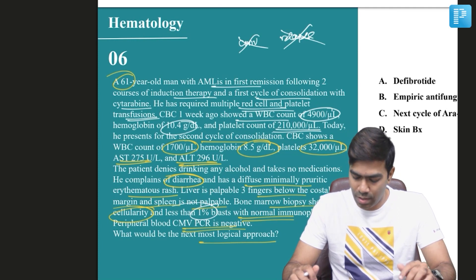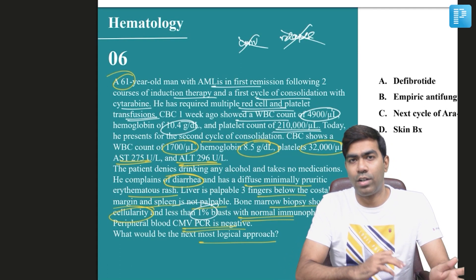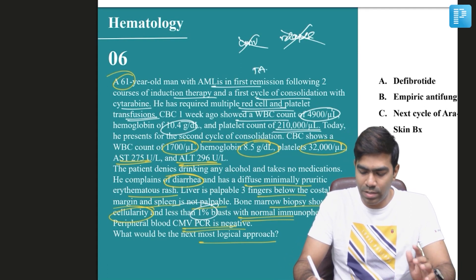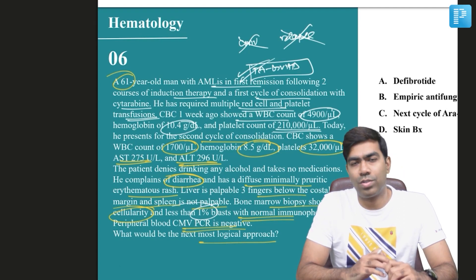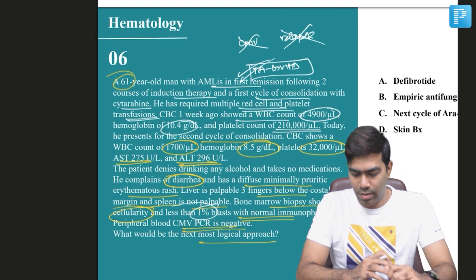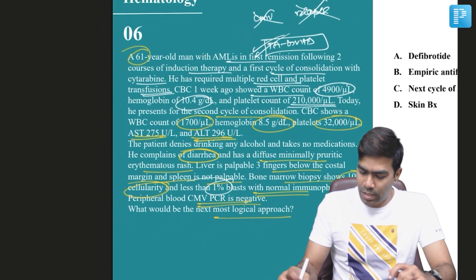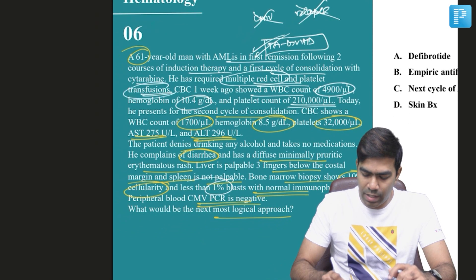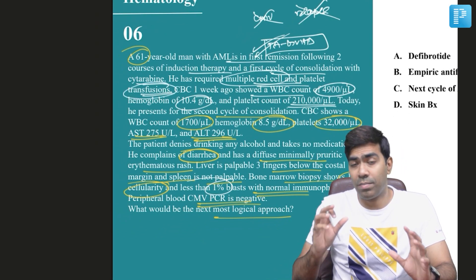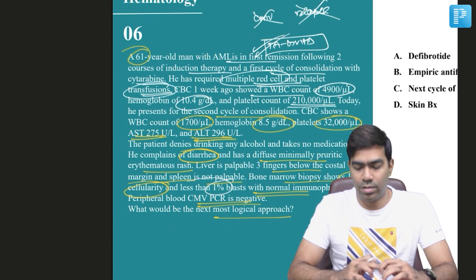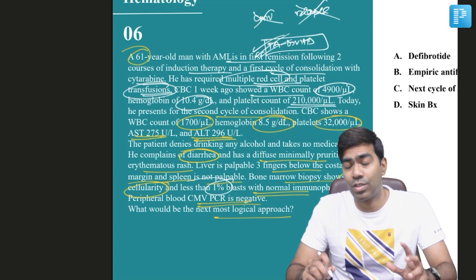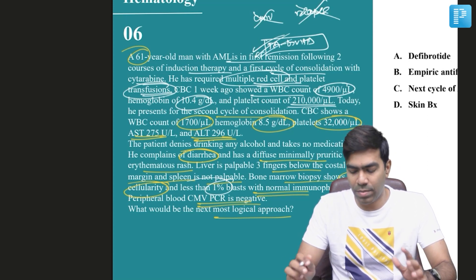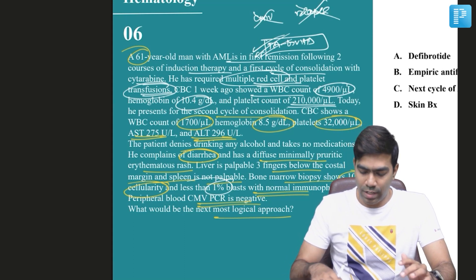The bone marrow blast is still less than five percent, which is a good response. This is a typical patient with transfusion-associated graft-versus-host disease. He received multiple red cell and platelet transfusions, but they have not mentioned anything about irradiated blood products — that is the reason this patient has developed transfusion-associated graft-versus-host disease, which is the primary diagnosis here.